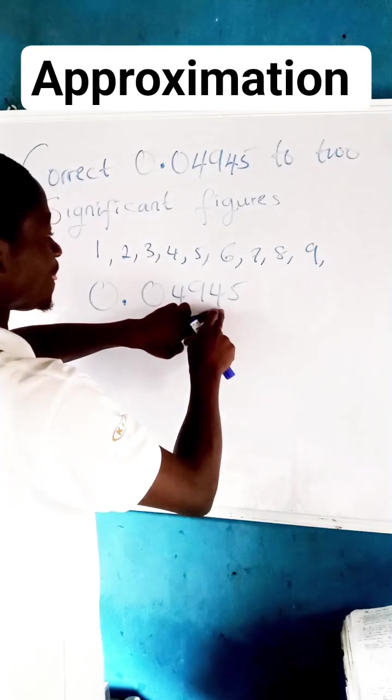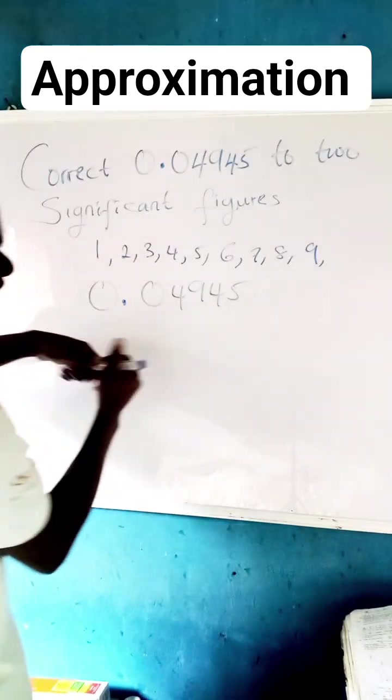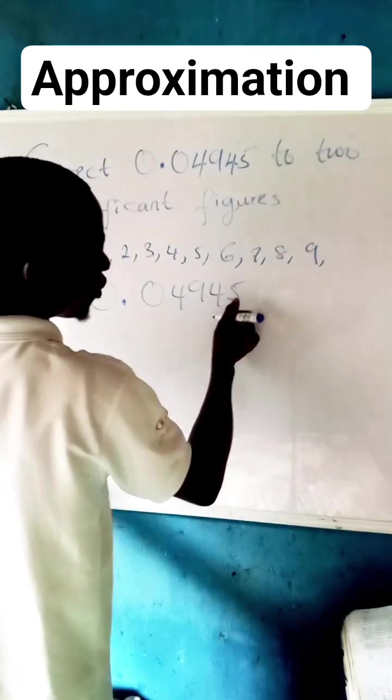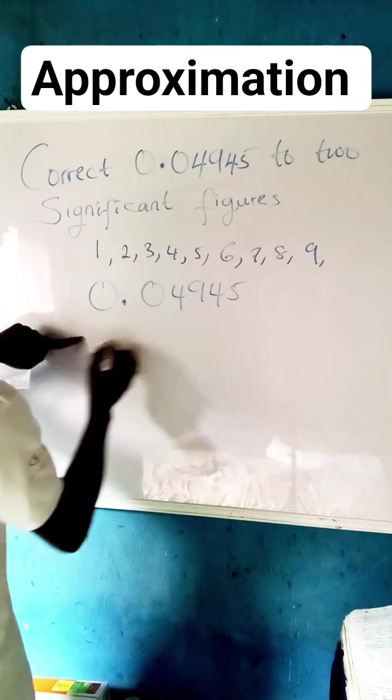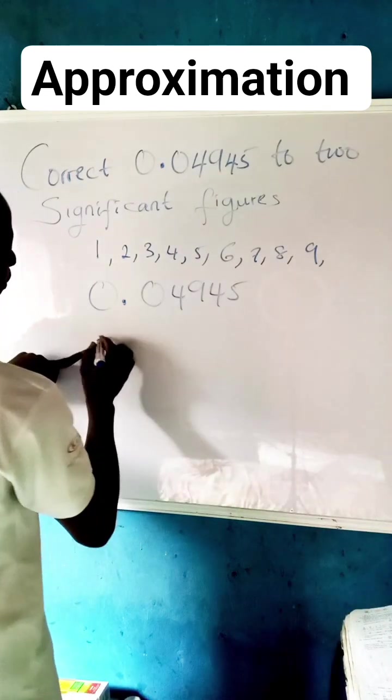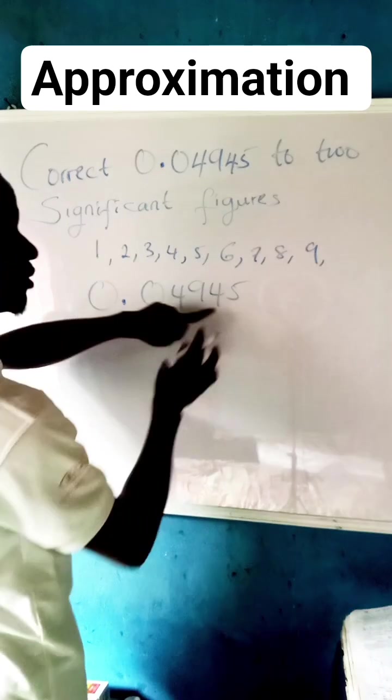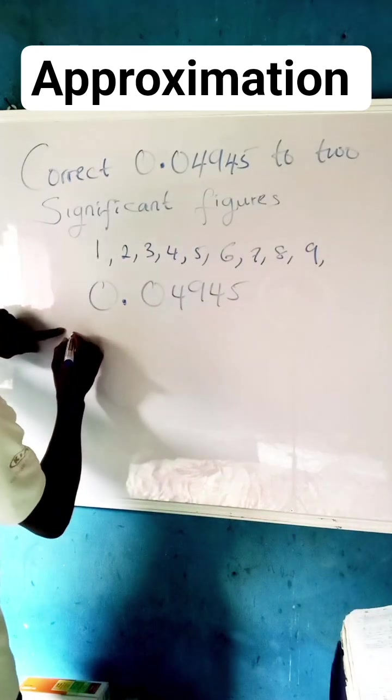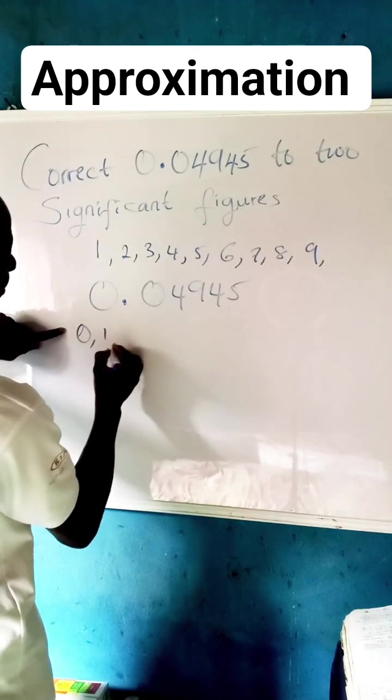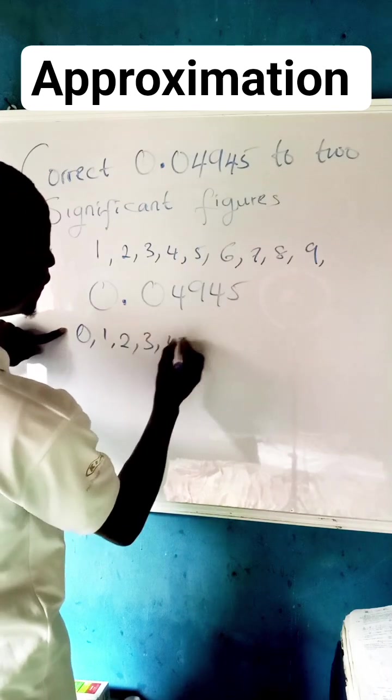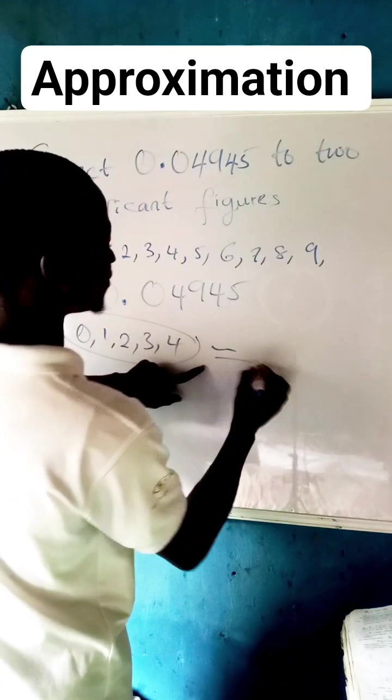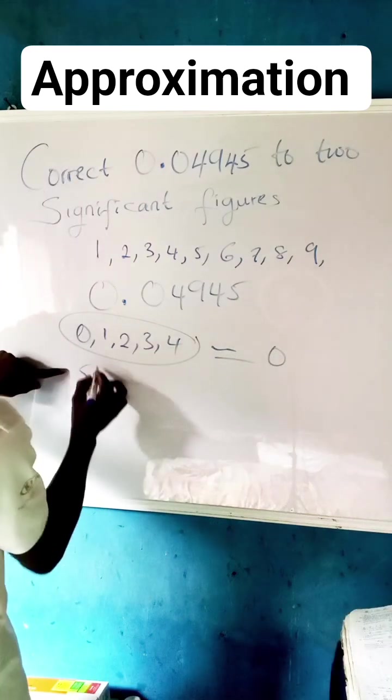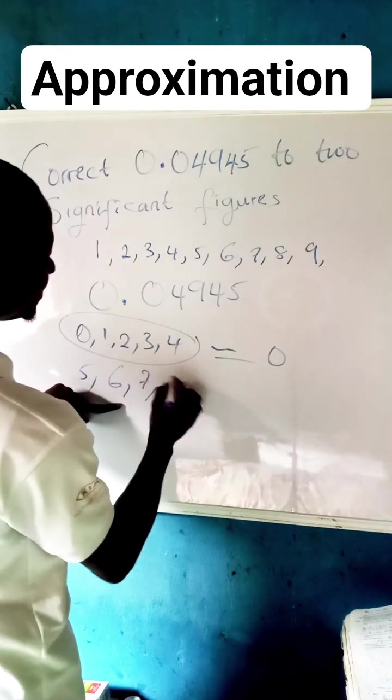Now because here is 4, we check: can 4 be rounded up to 1 or rounded up to 0? We can check. For a number to be rounded up to 1, the number must start from 5. For it to be rounded up to 0, the number must be between 0, 1, 2, 3, 4. From here, from 0 to 4, rounded up to 0. But from 5, 6, 7, 8, and 9 is rounded up to 1.